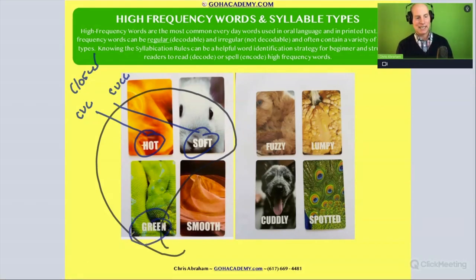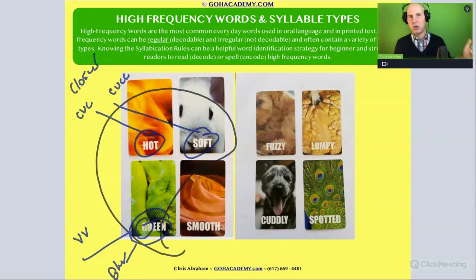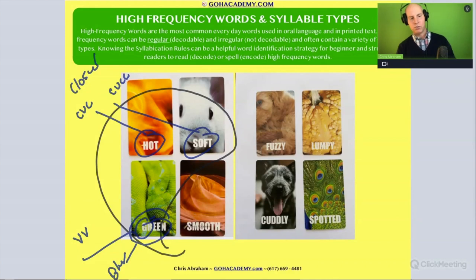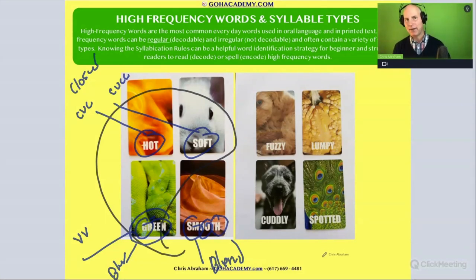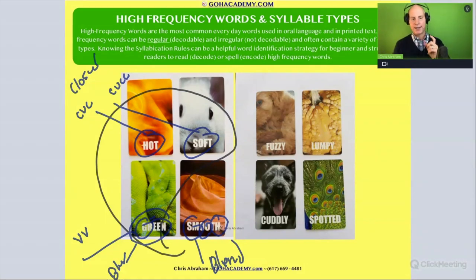Green is a single-syllable word that has a vowel team and a blend. A vowel team is when we have two vowels that make one sound — also known as a vowel digraph — and the vowel sound is long. Smooth is also a single-syllable word. It has a blend, the double-O vowel digraph (two vowels making one sound), and a consonant digraph at the end. So smooth has a blend at the beginning, a vowel digraph in the middle, and a consonant digraph at the end.